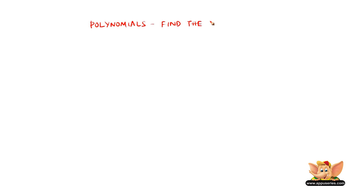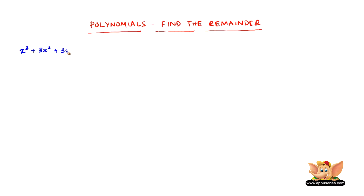Here, let us learn how to find the remainders of algebraic expressions. For example, let us find the remainder of x cube plus 3x square plus 3x plus 1 when divided by x plus 1. So, this is the dividend and this is the divisor.